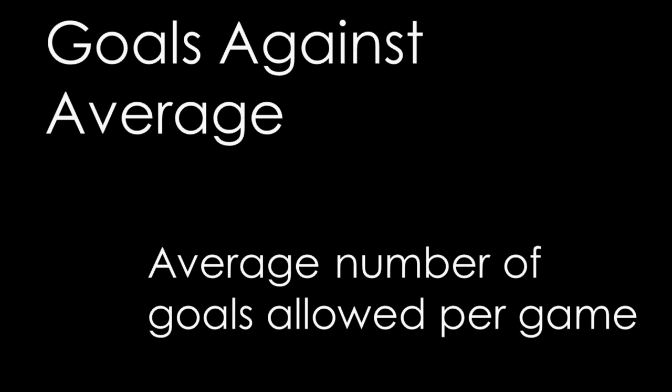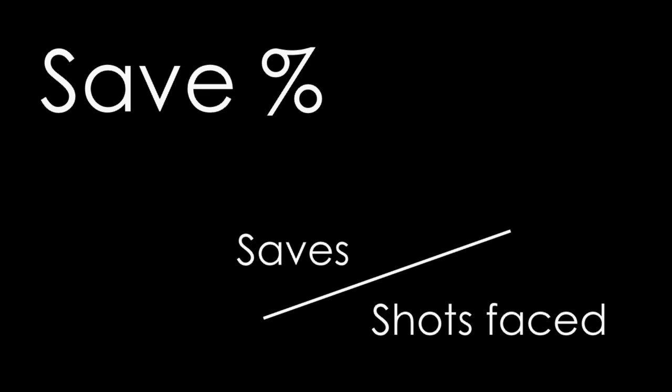This is why we have the stat of save percentage, which is simply the number of saves made divided by the number of shots that goalie has faced. Most goalies will want to be saving over 90% of the shots they face, or have a save percentage of .900, as it is written out usually to 3 decimal places. If you drop too far below that, you might not find yourself between the pipes for very much longer.